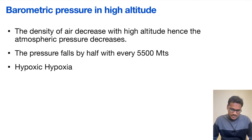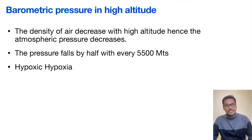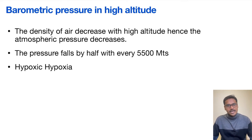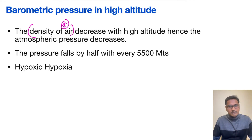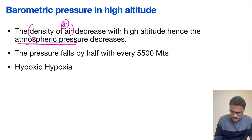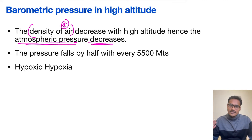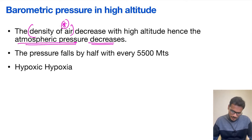Coming to barometric pressures at high altitude — as and when a person ascends to a higher altitude, the density of the air itself is going to reduce, so the barometric pressure will automatically come down. The atmospheric pressure decreases with high altitude, which is the reason why when a person ascends in mountains, he is usually presented with hypoxia.